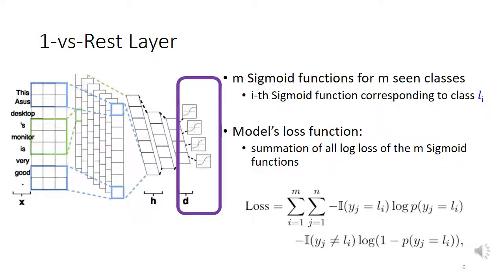The final layer is the one-versus-rest layer, consisting of M sigmoid functions for M known classes. The i-th sigmoid function corresponds to class Li. The model's loss function is the summation of all log losses of the M sigmoid functions over the training data. In the loss function, M indicates the M known classes, N indicates the total number of training examples. For each sigmoid function and each training example, we get its binary cross entropy — belonging or not belonging to class Li — and the summation over all M sigmoid functions and N training examples is the total loss.